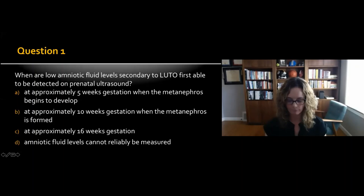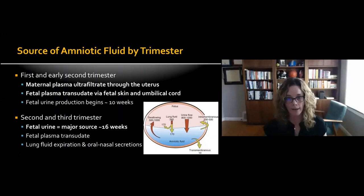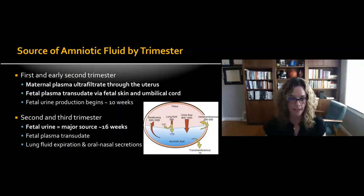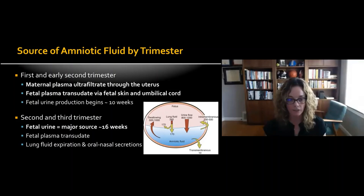Important in thinking about that question is where amniotic fluid comes from, and we think about that by trimester. In the first trimester and early second trimester, maternal plasma ultrafiltrate is responsible for a lot of the amniotic fluid, as well as fetal plasma transudate via the fetal skin and umbilical cord. Fetal urine production begins around 10 weeks with the completion of the metanephros. In the second and third trimester, fetal urine is a major source of amniotic fluid, along with fetal plasma transudate, lung fluid expiration, and oral-nasal secretion.